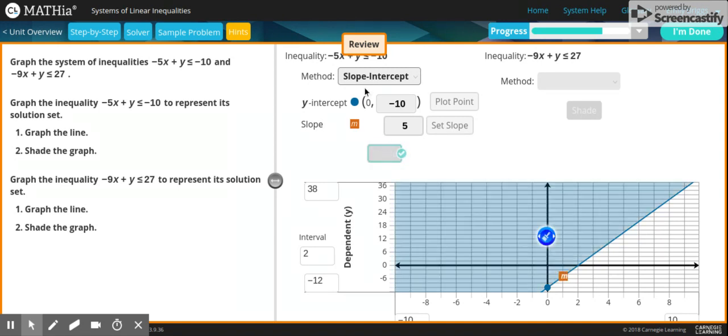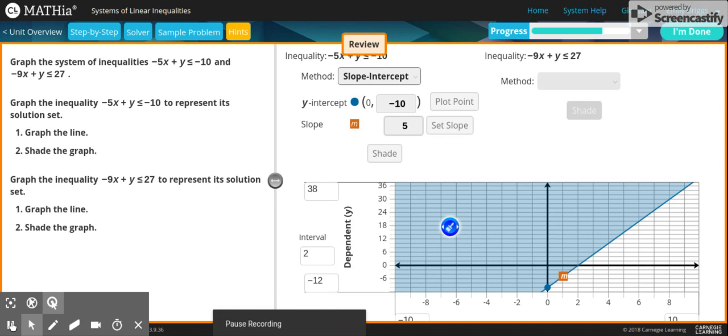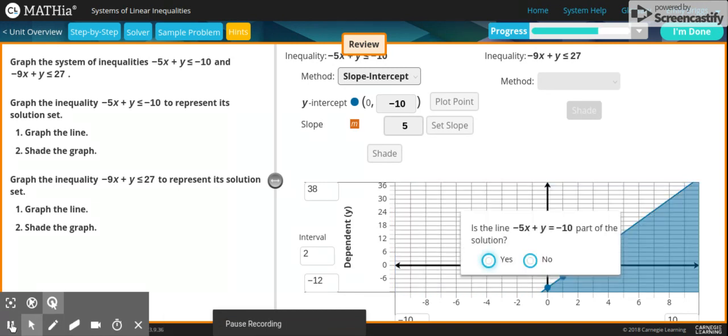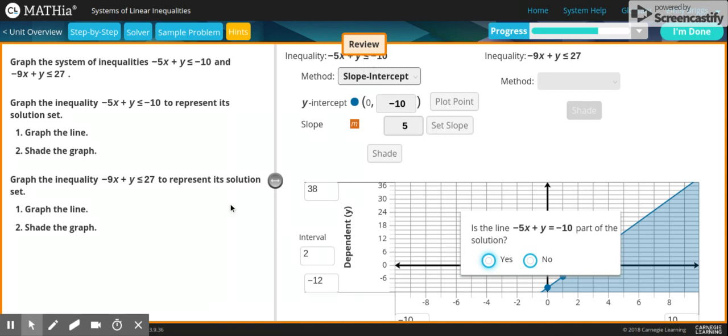Then you're ready to shade. Depending on the way that your sign is going, depends on if you shade the top or the bottom. In this situation, you shade below the line because the sign is greater than or equal to. Is negative 5x plus y equals negative 10 part of the solution? Yes or no. In this situation, it is.